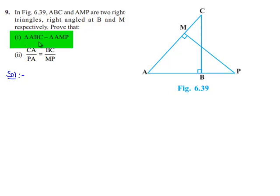Here in the first case he asked us to prove that triangle ABC is similar to triangle AMP. So let us consider both the triangles. So in triangle ABC and triangle AMP,